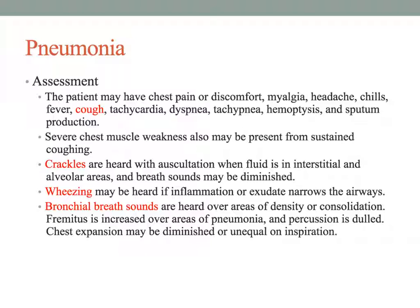People with bacterial pneumonia may experience an abrupt, almost acute onset with severe shaking, chills, sharp pain with coughing, and a more purulent, productive cough. This is not always obvious whether it is bacterial or viral, but there are subtle things that can help distinguish between the two.